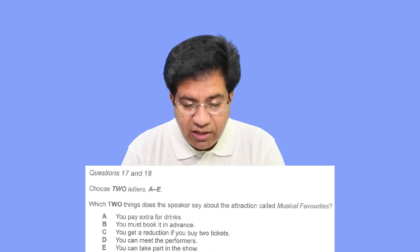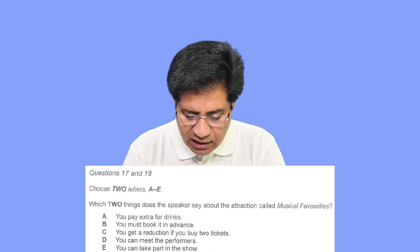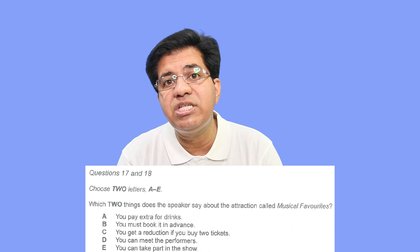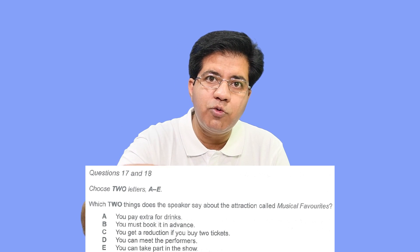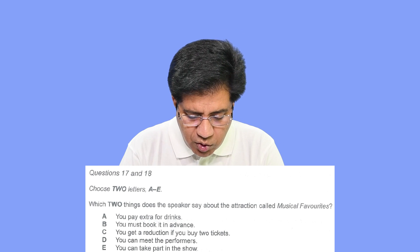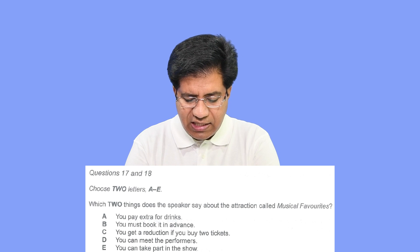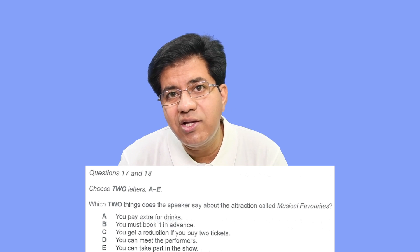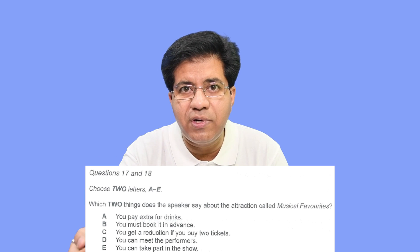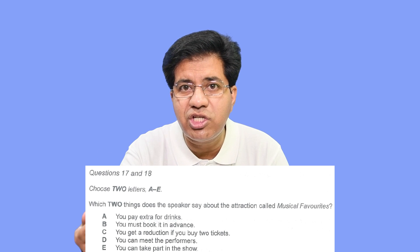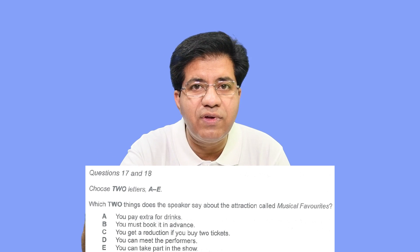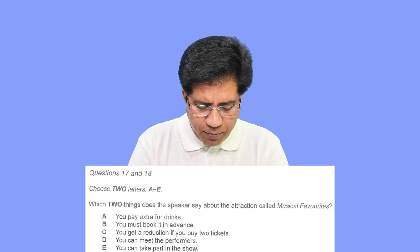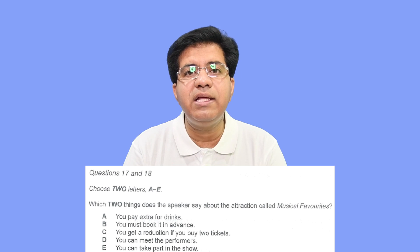Option D: 'you can meet the performers.' Since it's a musical favourite, performers are the musicians — all the people who are going to play music. For that they can say 'chance to chat with the cast,' 'chance to chat with the performers,' 'with the musicians,' 'with the singers,' 'with the orchestra players,' or anything like that.